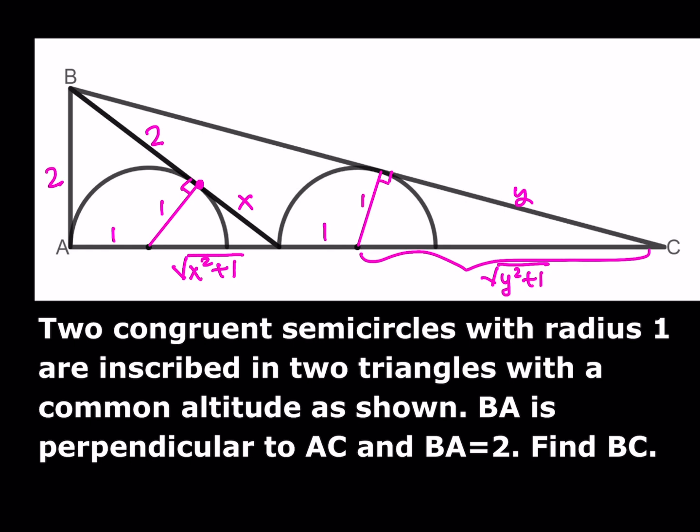We're going to use a very nice tool that's used a lot in geometry, in Olympiad problems, in competition problems — pretty much all types of geometry problems. It's called similarity. We're going to use similarity here. If you call this angle alpha and this one beta, then alpha plus beta is 90 degrees, and therefore this angle is also going to be beta. So we have an alpha-beta-90 triangle and another alpha-beta-90 triangle, and they are similar.